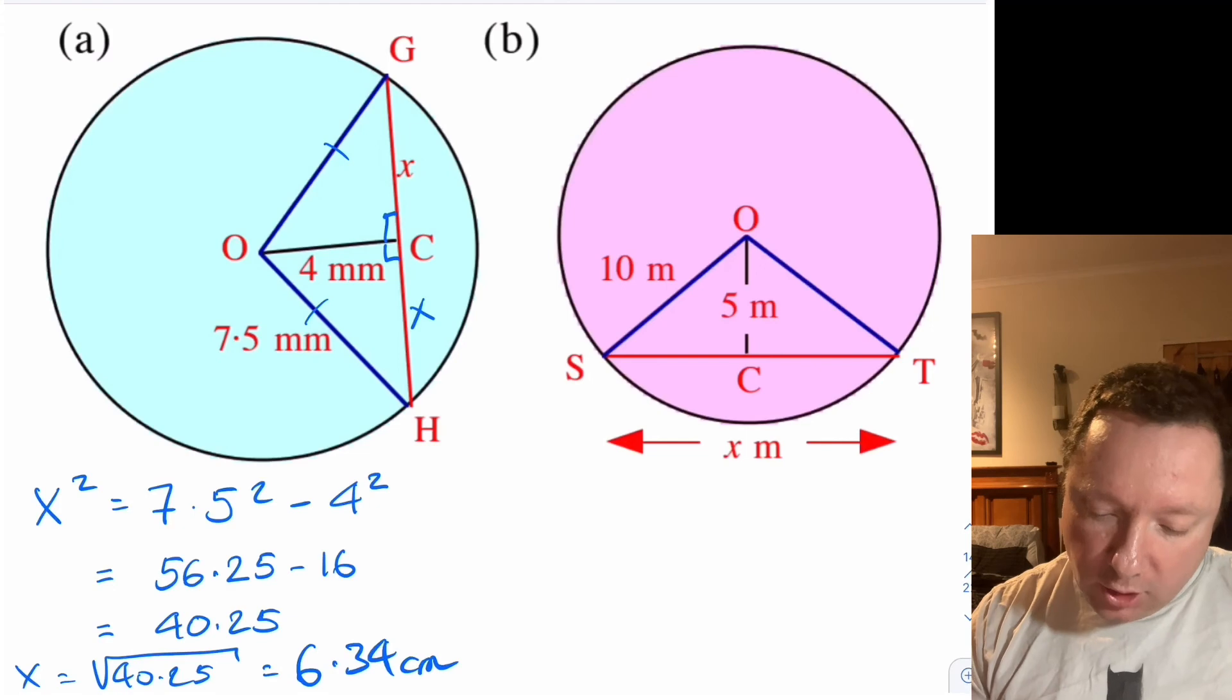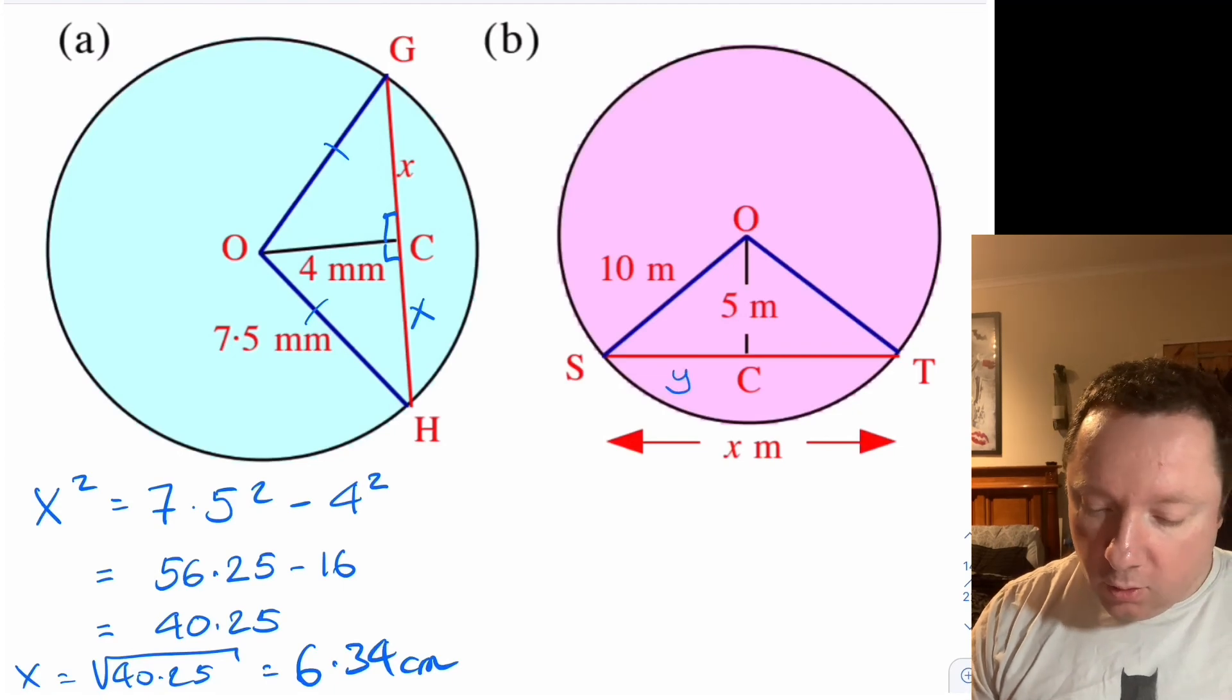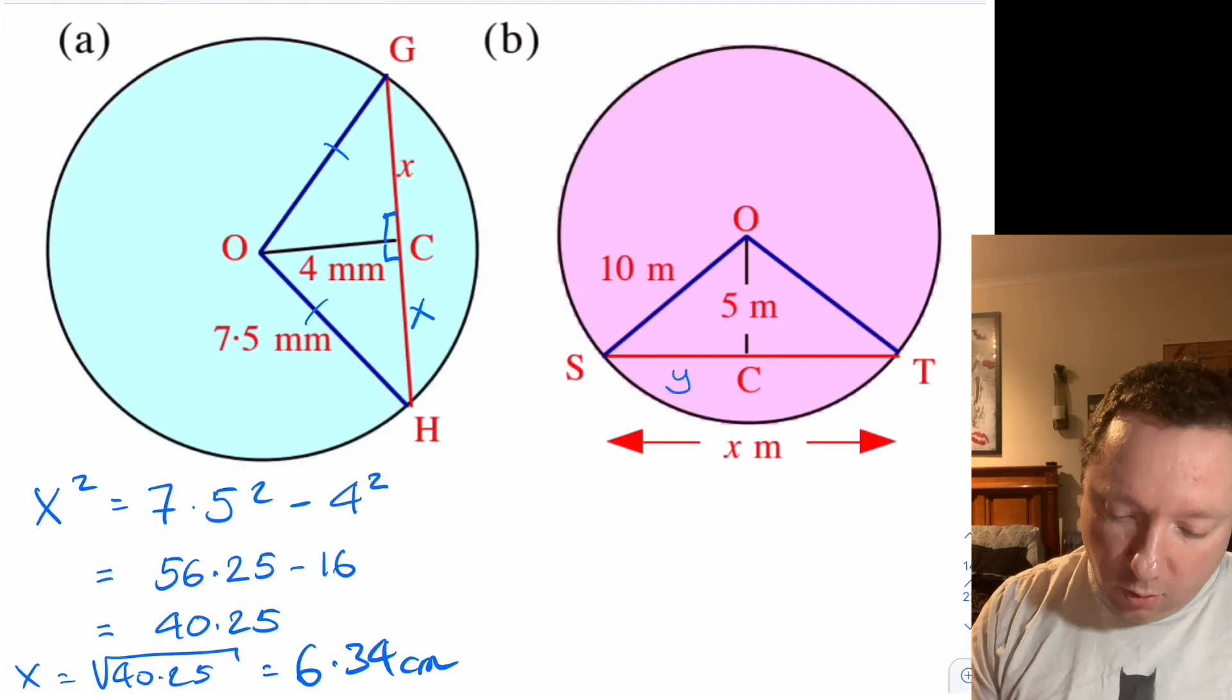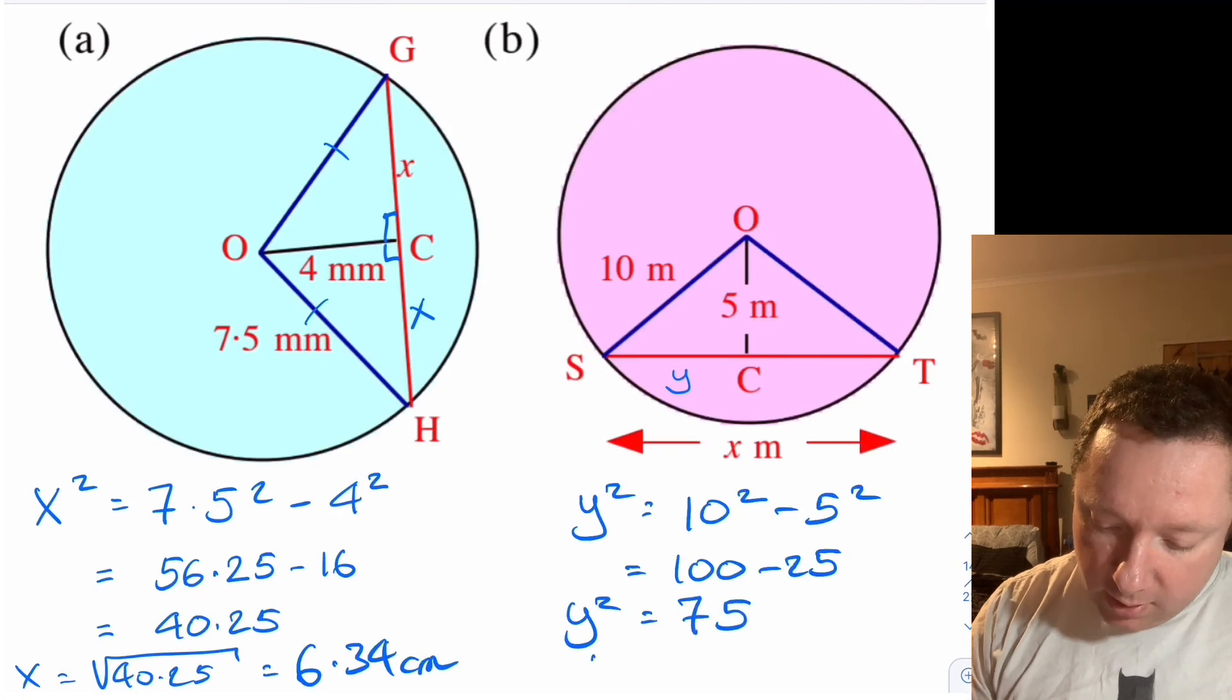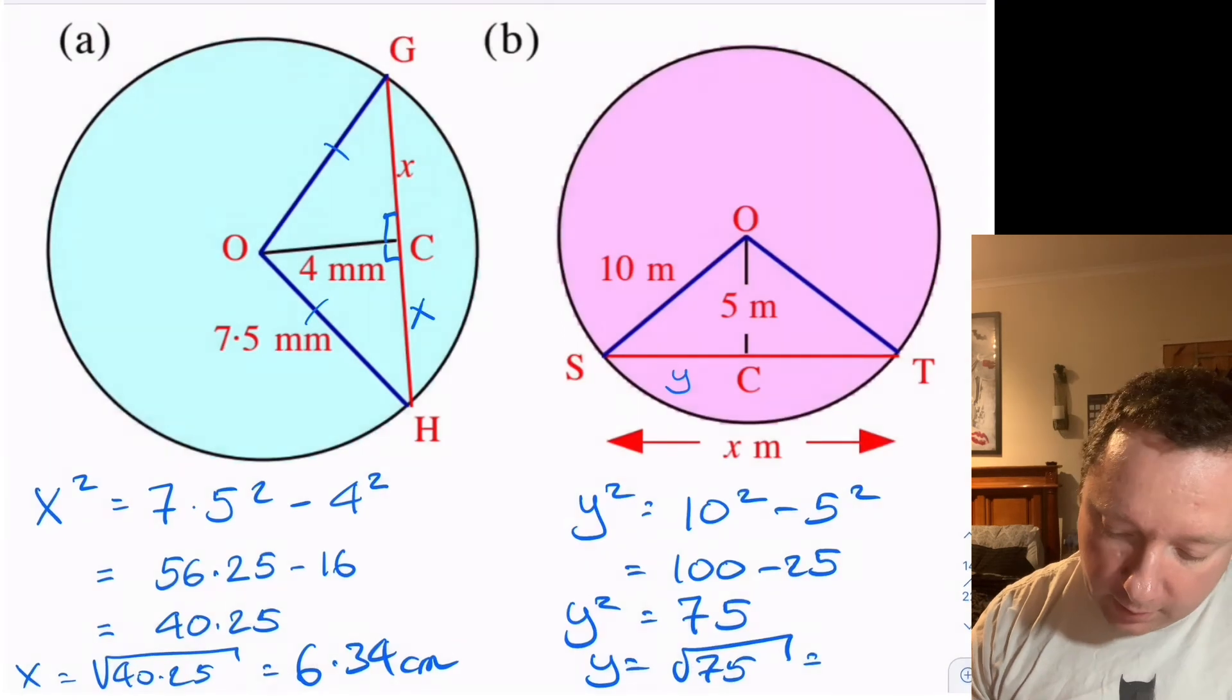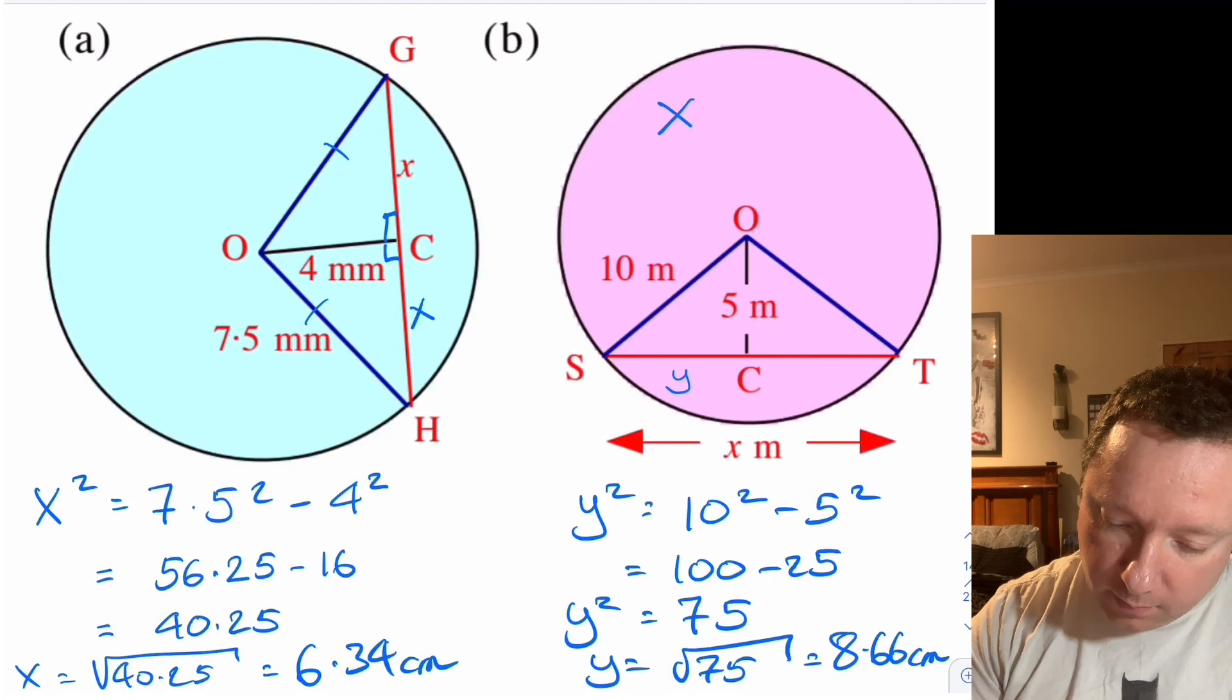And then question B. Very similarly. So if I look at this bit here, I'll call it Y. Then two of them will make X. So I've got Y squared is 10 squared minus 5 squared. It's 100 minus 25. So Y squared is 75. So Y is the square root of 75, 8.66. So X must be 2 times 8.66, which is 17.32 metres.